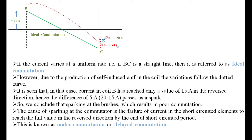Therefore, if there is a change in the current from one direction to the other, because of this self-induced EMF, the coil variation follows the dotted curve. It is not fully changing from plus 20 amperes to minus 20 amperes. It is seen that the current in coil B has reached only minus 15 amperes in the reverse direction. Hence the difference of 5 amperes - that is 20 minus 15 - passes as a spark. We conclude that sparking at the brushes results in poor commutation. The cause of sparking at the commutator is the failure of the current in the short-circuit element to reach its full value in the reverse direction by the end of the short circuit period.